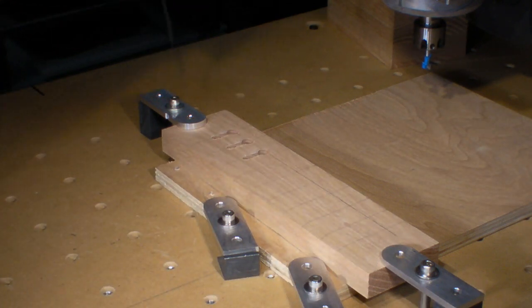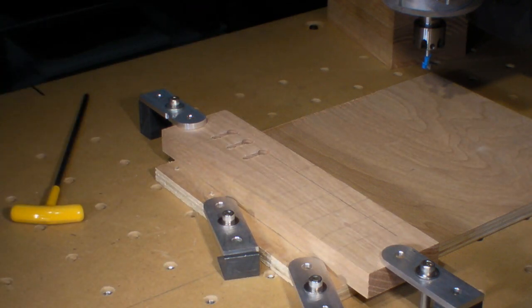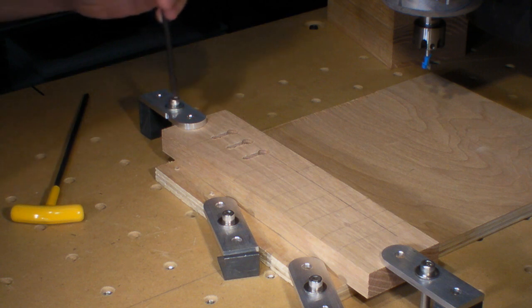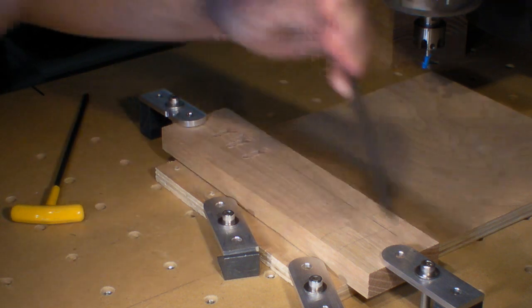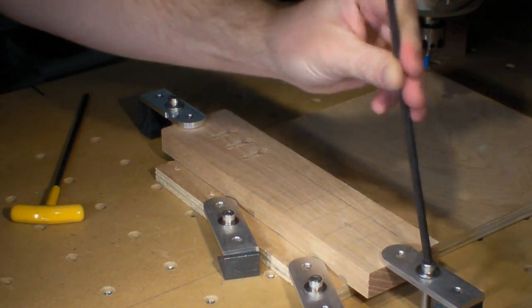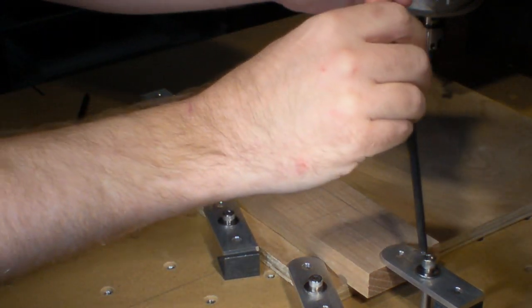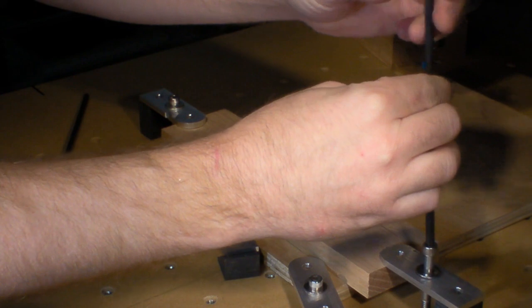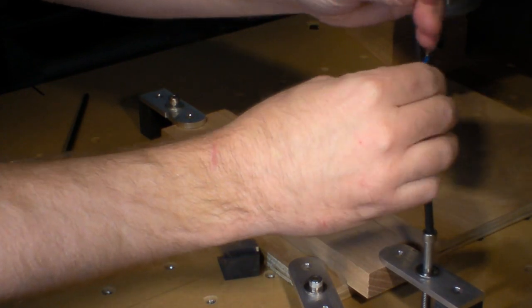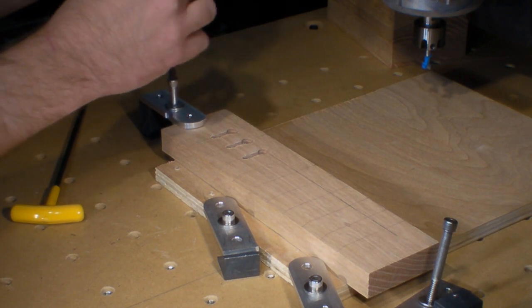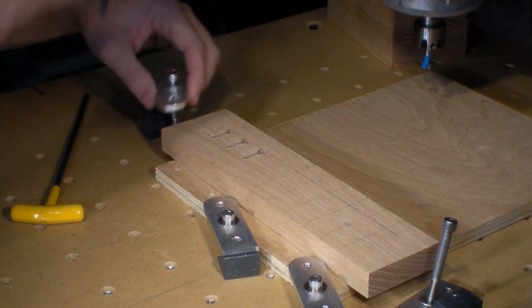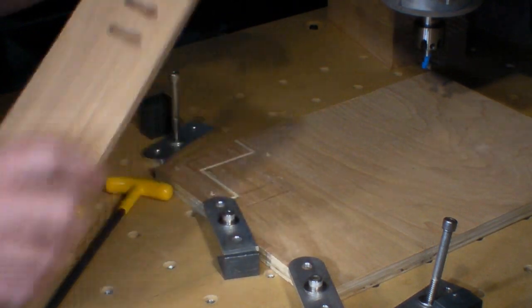Alright, so that did pretty good. I didn't have to change anything. You could hear the bit load up when it was down in the slot. And I'm thinking if I would have been using some air, possibly blowing in, or at least getting some air blowing around the hole, it would have pulled out a lot of that sawdust. But it handled it. It didn't break. I was just expecting it to go flying.